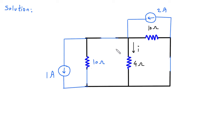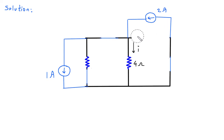Now as we can see that this 2 ampere and 1 ampere are in opposite directions. We will simplify this circuit — this 10 ohm and 10 ohm are in parallel, so 10 ohm parallel with 10 ohm will be 5 ohm. This is in upward direction and this is in downward direction, so this will be 2 minus 1, which is 1 ampere.